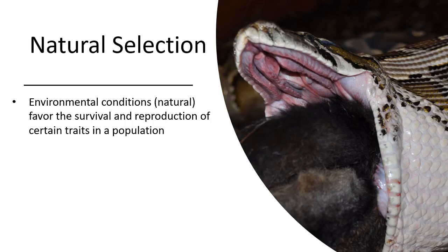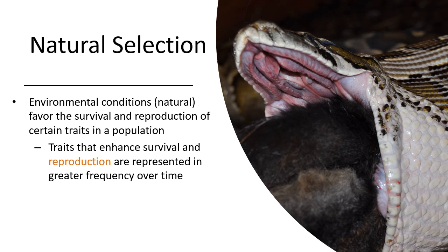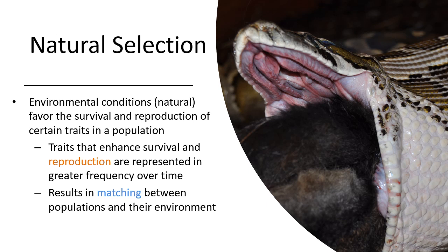Natural selection: there are mechanisms by which only a few of a population will survive, depending on the environment. The environment creates conditions for survival and reproduction — there's no intention, but they do exist. Traits that enhance survival and reproduction are represented in greater frequency over time, resulting in a match between populations and their environment. We sometimes call these adaptations.